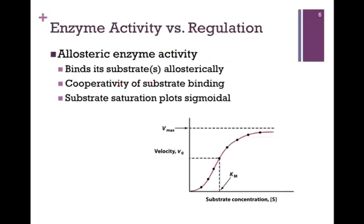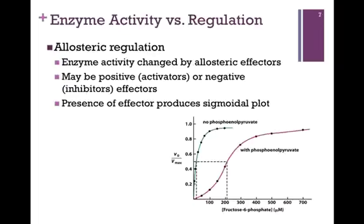Let's distinguish between allosteric activity and allosteric regulation. An allosteric enzyme is one that binds its substrate allosterically always — there is always a cooperativity of substrate binding, and the substrate saturation plot is always sigmoidal. So the enzyme always has allosteric activity. However, in this example with PFK, the activity changed in the presence of an effector. That effector could be positive in the case of an activator, or negative in the case of an inhibitor. It's the presence of the effector that produces the sigmoidal plot in allosteric regulation — in other words, the enzyme does not have inherent allosteric activity.